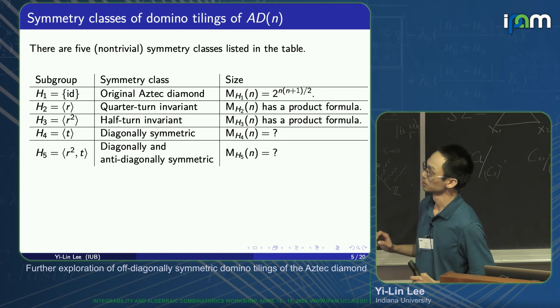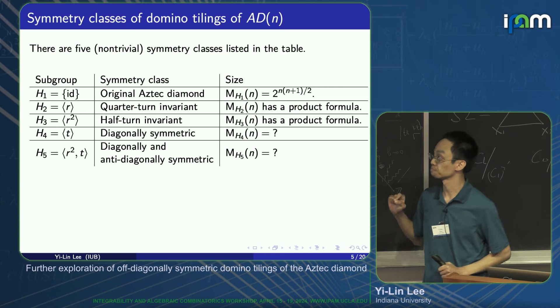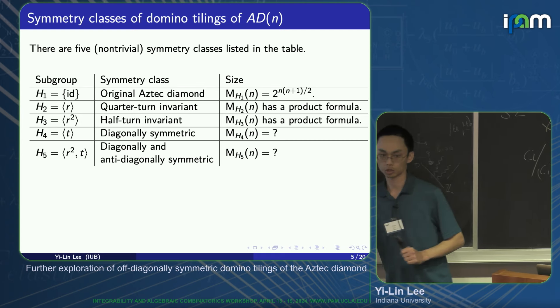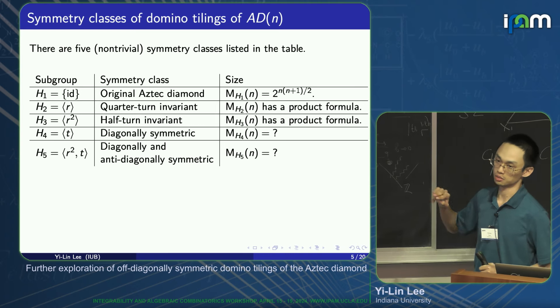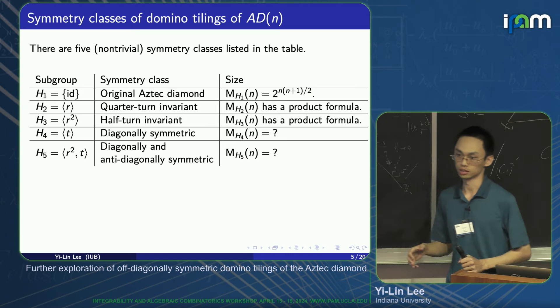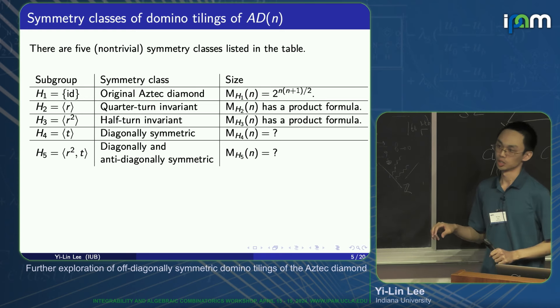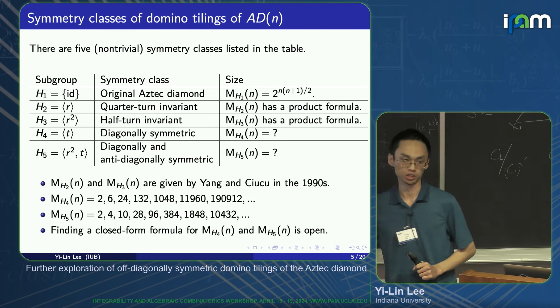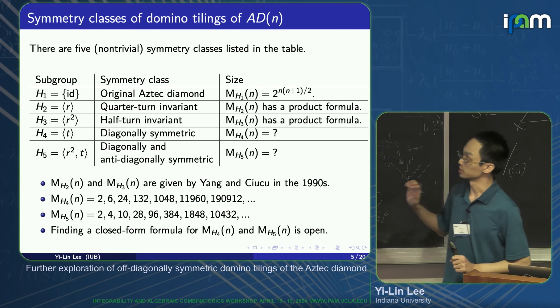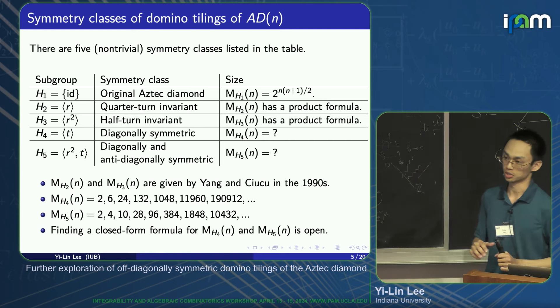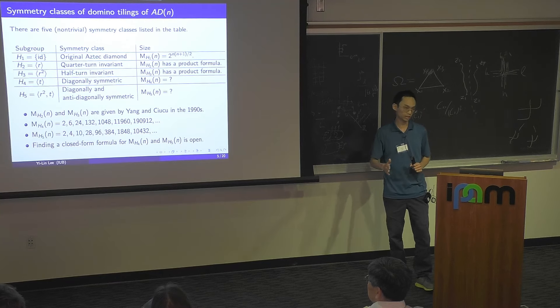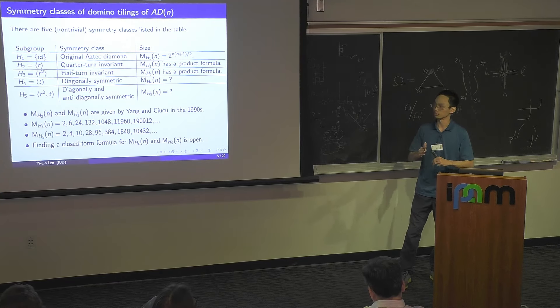There are lists here. If we take the subgroup to be the trivial group, the corresponding symmetry class is just the original Aztec diamond, and we know the number of domino tilings in this symmetry class. For the next two, it's about the rotational symmetry. This is about the domino tilings that are invariant under a 90 degrees rotation or a 180 degrees rotation. For these two, they have been started by Jockusch and Yang-Chigu in the 1990s. They have product formulas counting those numbers of tilings. But for the last two, it's about reflective symmetry. Basically, that's domino tilings symmetric with respect to the vertical diagonal and both vertical and horizontal diagonals of the Aztec diamond region.